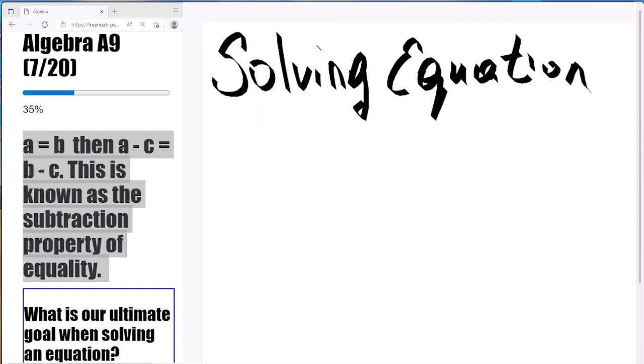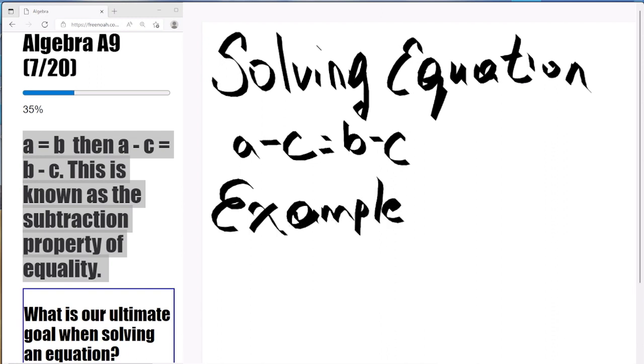Once again, we're solving equations here. A minus C equals B minus C. Let's use this in an example. Very similar to the addition property of equality, but this time we're subtracting. So for example,